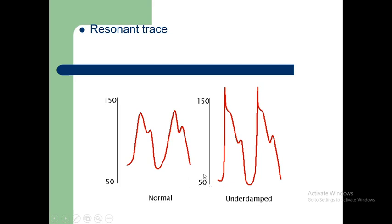For example, if diastolic blood pressure is 50 and systolic blood pressure is 150, the gap between them is called pulse pressure. In this case the pulse pressure is 100 (150 minus 50).